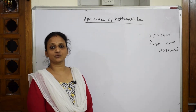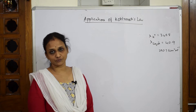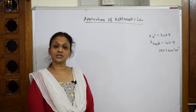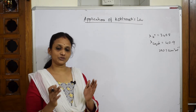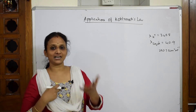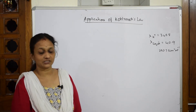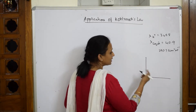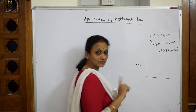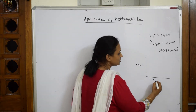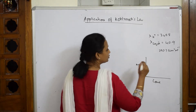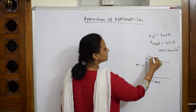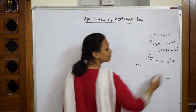The next concept is applications of Kohlrausch law, a very important concept. At infinite dilution, the molar conductivity can be determined by the contribution of both the cation and anion, each multiplied by their respective molar conductivities. We have drawn a graph with molar conductivity on the y-axis and concentration on the x-axis. For strong electrolytes, we extrapolate the graph and find the molar conductivity at infinite dilution.